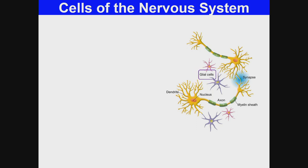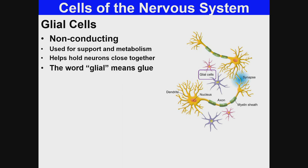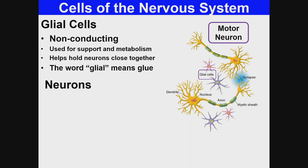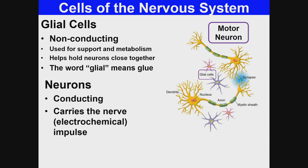There are two main cell types in the nervous system. Glial cells are non-conducting; they are used for support and metabolism of the nerve cells and help to hold neurons close together. The word glial means glue. Neurons are conducting — they carry the nerve or electrochemical impulse.